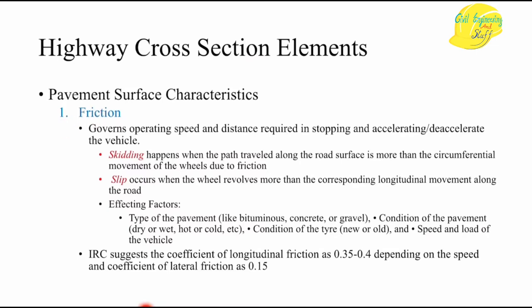The first cross section element is friction. Friction governs the operating speed, acceleration, and deceleration of the vehicle. As per the IRC — the Indian Road Congress, the standard code defining road specifications — the coefficient of longitudinal friction is taken as 0.35 to 0.4, and the coefficient of lateral friction is taken as 0.15.